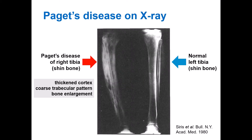On this x-ray taken from the literature, you see Paget's disease affecting the right tibia, indicated by the red arrow. You can appreciate that the tibia or shin bone is highly abnormal — it has a thickened cortex, a so-called coarse trabecular pattern, and it is enlarged, leading to deformity. You can compare the affected right tibia with the unaffected left tibia.